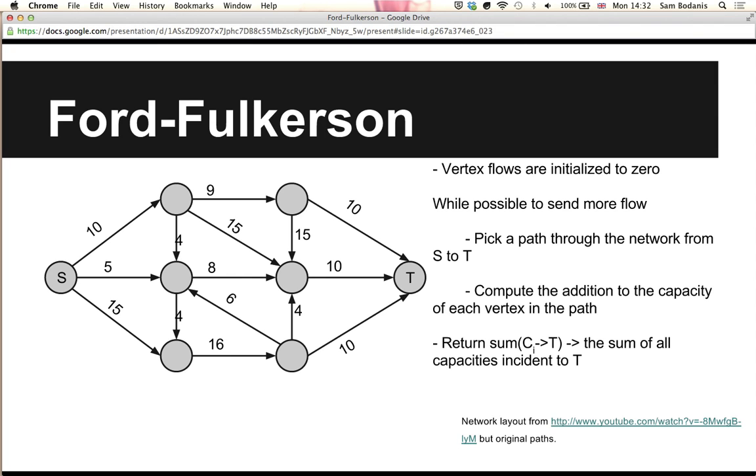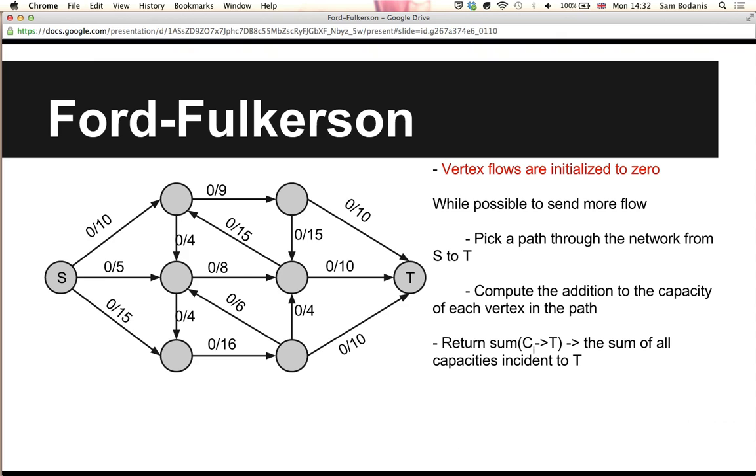The first step of this algorithm is to initialize the flow of every vertex to 0. This means that there is currently no water being pushed between any vertices. The next step is a loop that says, while it is possible to send more water throughout the network, determine a new path to fill with water.